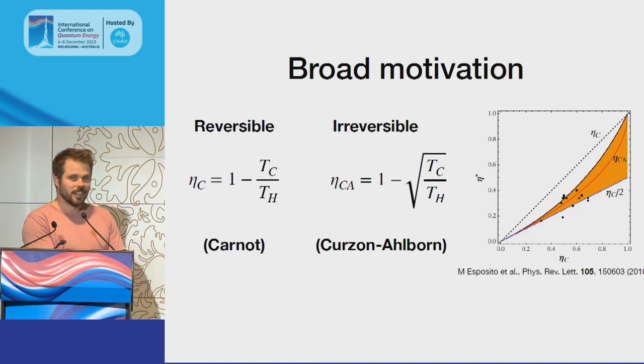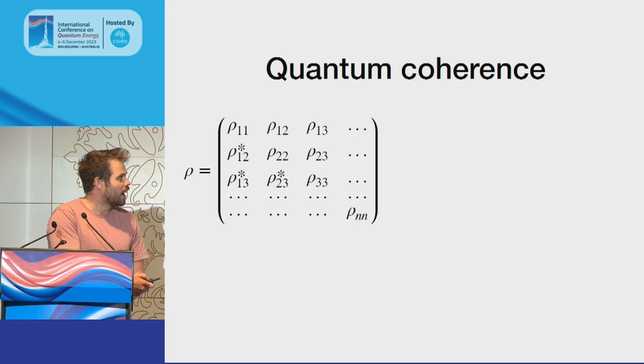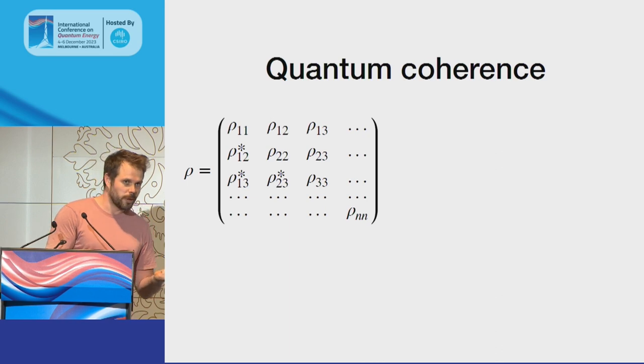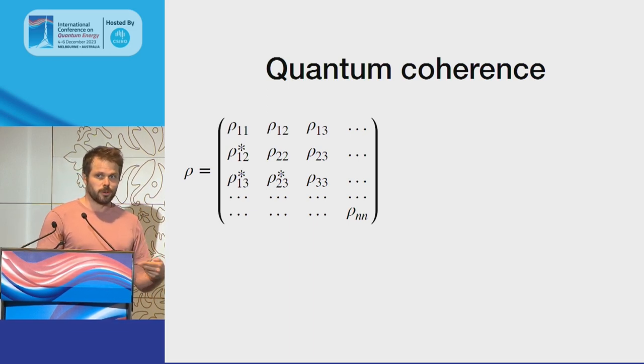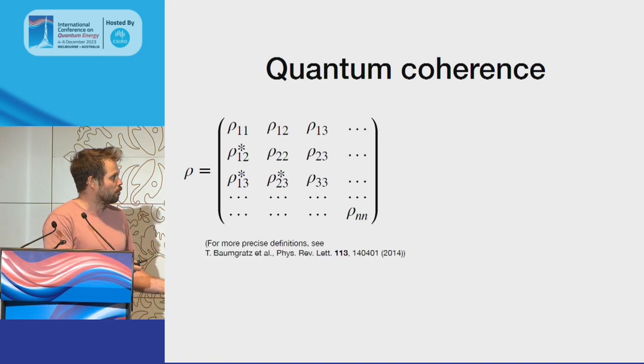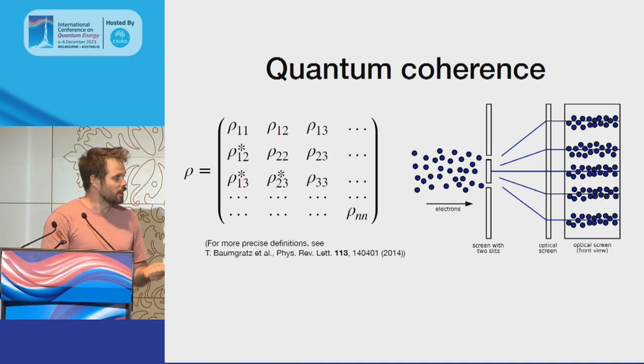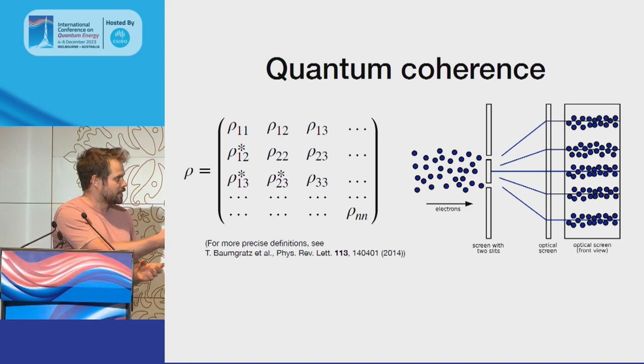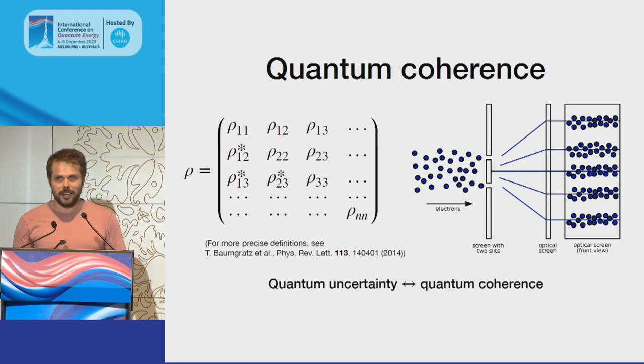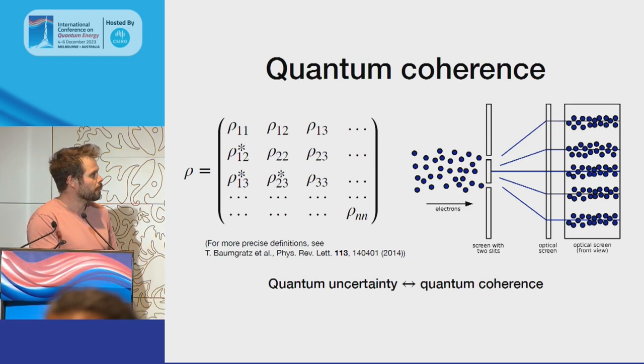Quantum coherence—what do I mean by that? For those familiar with quantum mechanics, we have a density matrix written in some basis, and by coherence I mean the off-diagonal elements of that density matrix, which gives rise to quantum superpositions. If you're not familiar with density matrices, you can imagine an experiment like particles going through a double slit. Despite these being particles, there can still be an interference pattern because the particles can exist in superpositions of different position states. Ultimately, quantum coherence is synonymous with quantum uncertainty with respect to some basis.